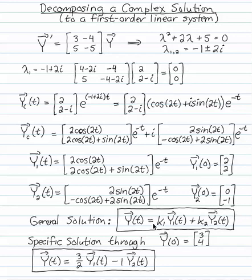This gives me the general solution. y of t is k1y1 plus k2y2. And an example of a specific solution through 3, 4, you can verify that that'll be 3 halves times the first solution minus 1 times the second solution because 3 halves times 2, 2, and minus 1 times 0 minus 1 would give me that initial condition of 3 and 4.